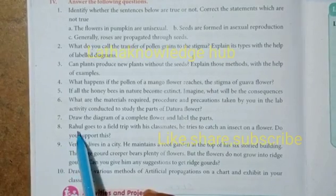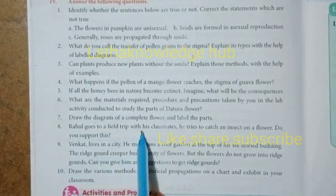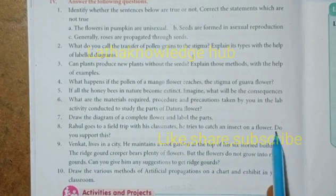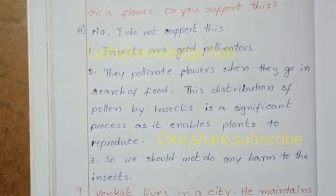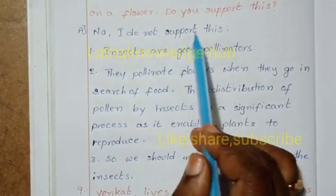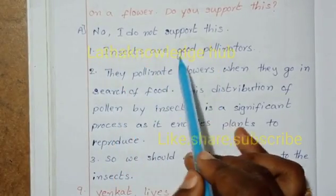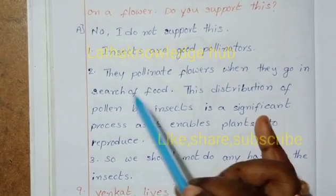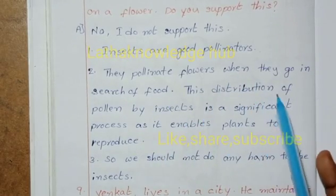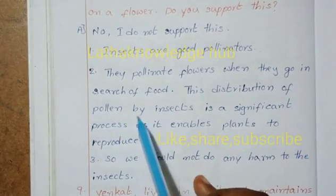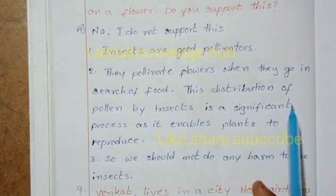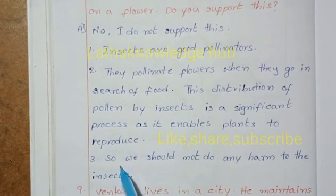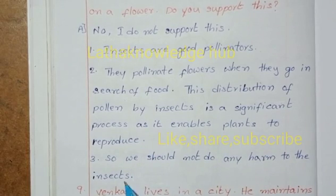Eighth question: Rahul goes on a field trip with his classmates and tries to catch an insect on a flower. Do you support this? No, I do not support this. Insects are good pollinators - they pollinate flowers when they go in search of food. This distribution of pollen by insects is a significant process as it enables plants to reproduce. So we should not do any harm to insects.